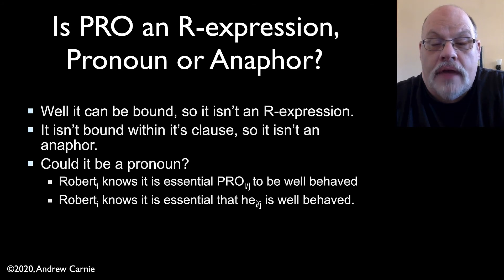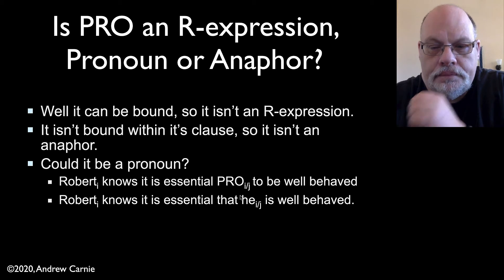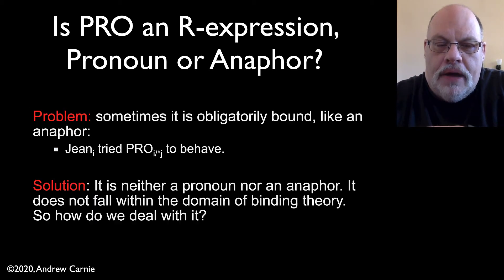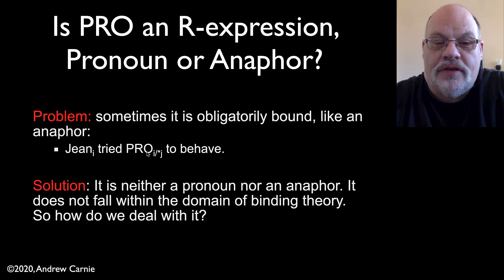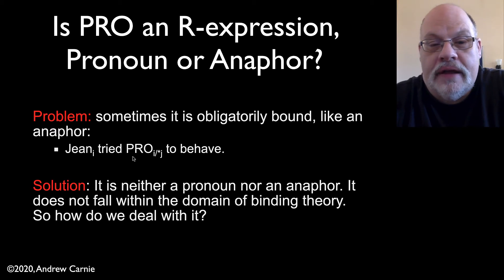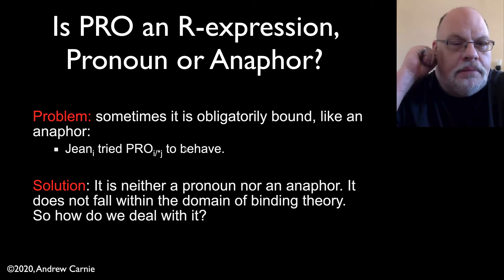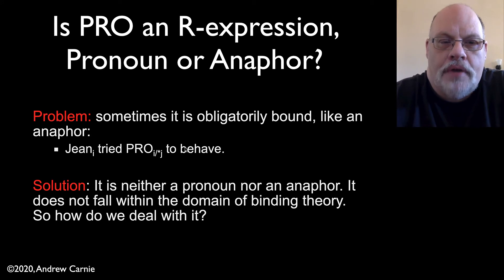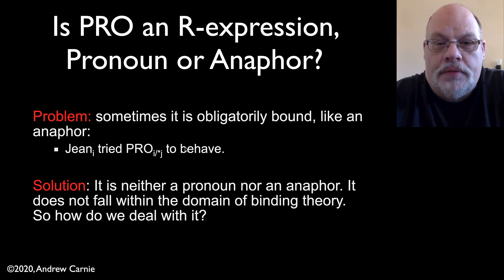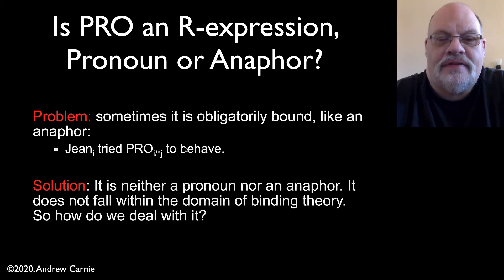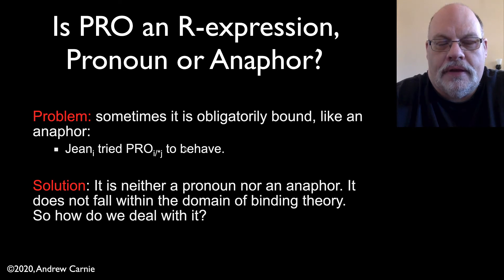'Robert knows that he is well-behaved' — that 'he' could be Robert or somebody else. So pro is behaving like a pronoun in this non-obligatory context. But the problem is that sometimes when it's obligatorily bound, it's actually behaving like an anaphor in the sense that it must refer back to something. But we've argued that pro is actually in an embedded clause, so it appears to be neither. It's definitely not an R-expression, and it has some properties of pronouns and some properties of anaphors. One common approach is that pro is neither a pronoun nor an anaphor, and so it isn't even subject to binding theory. The co-reference comes from something else. There is a whole theory about this, but it's probably one of the messiest bits of syntactic theory.